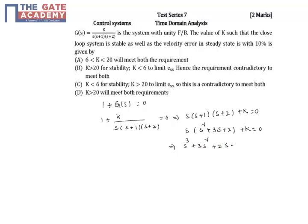So this is the characteristic equation. Once you find the characteristic equation, you can find the stability using the Routh array: s cube, s square, s power 1, s power 0. Here the coefficients are: 1, 2 for s cube row; 3, K for s square row.